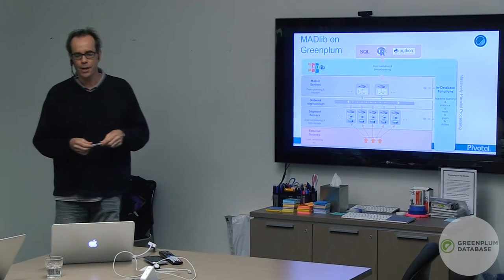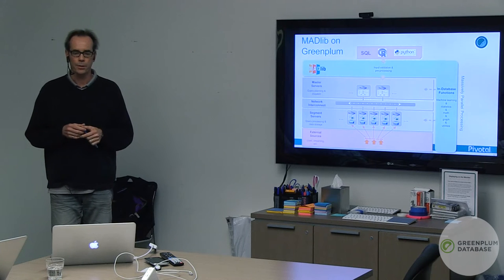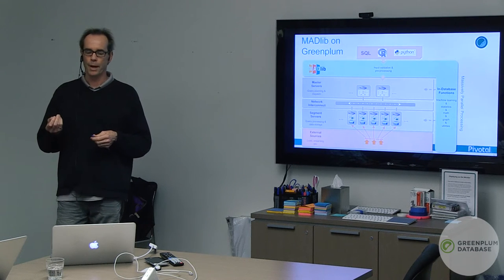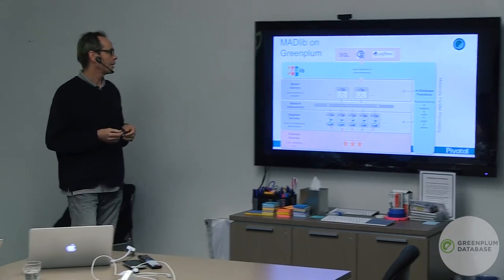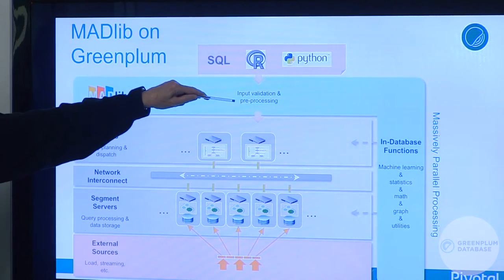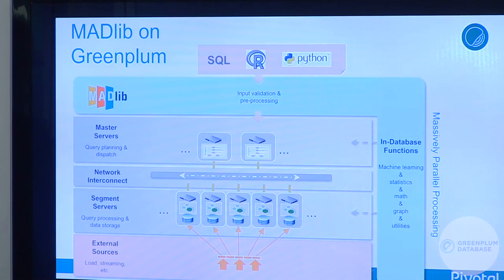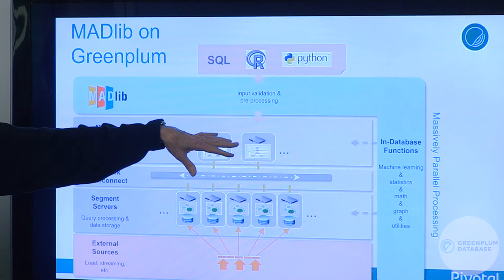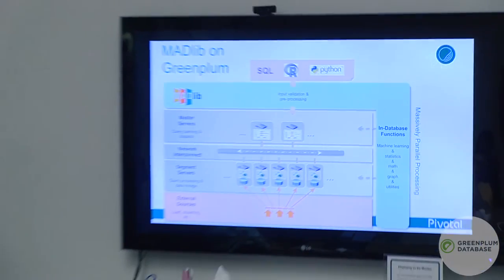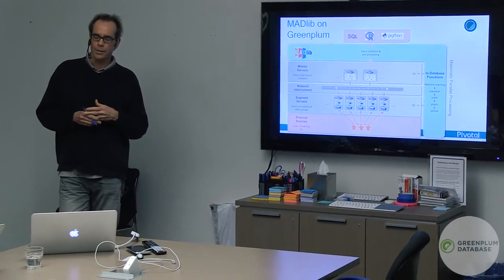Madlib is a layer on top of Greenplum but also has shared objects embedded in the database. It accepts SQL and has an R interface and a Python interface. There's a Python layer that does input validation and preprocessing. Within the database are in-database functions for machine learning, statistics, math, graph, and various utility functions. You can think of Madlib as both a layer above as well as shared objects embedded in the database.